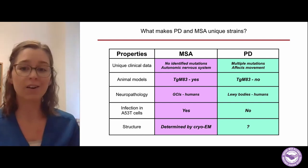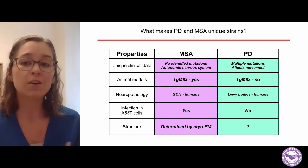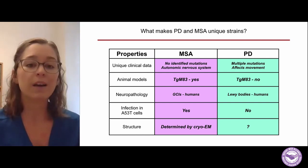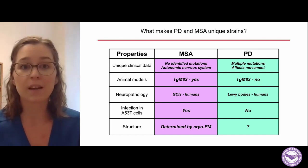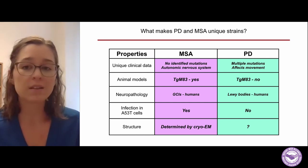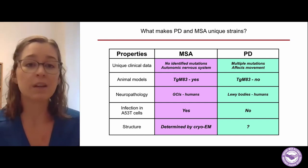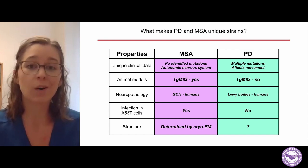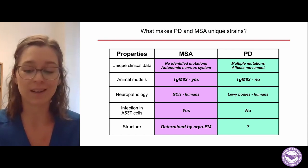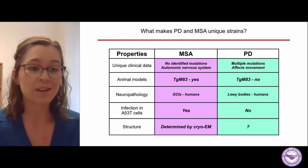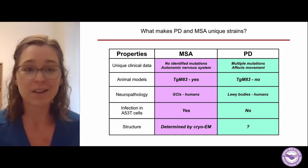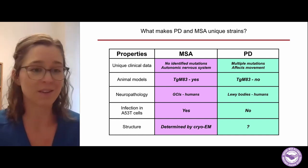We can now further complete our table. We have a structure for MSA. Up to this point, nobody has been able to solve the structure for Parkinson's disease, so hopefully in the next few years somebody will be able to do that so we can improve our assays and understand more about these strain properties.